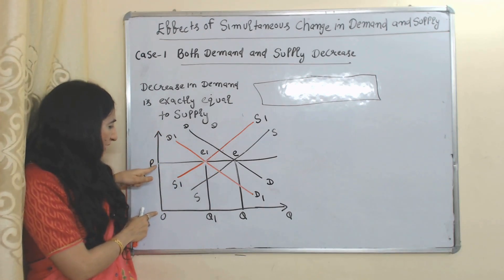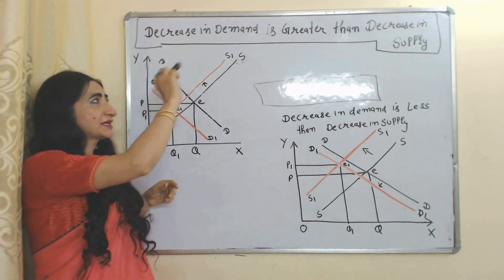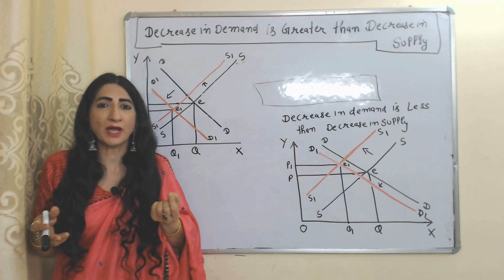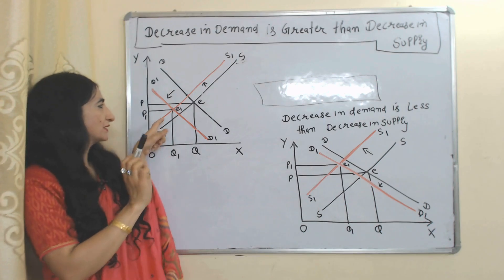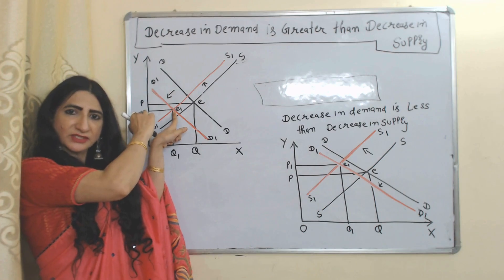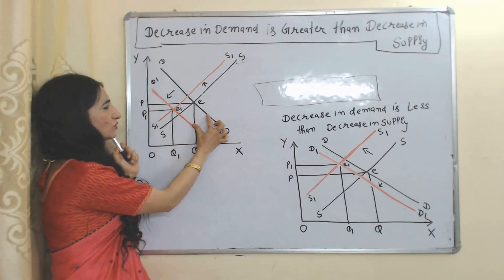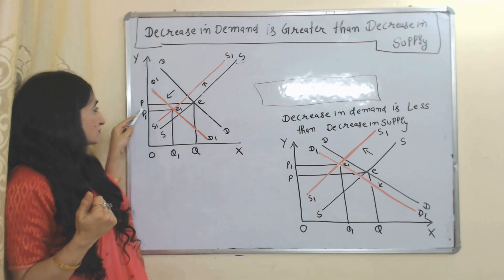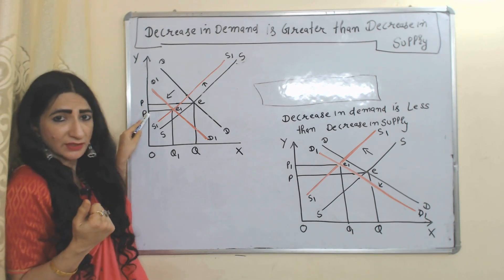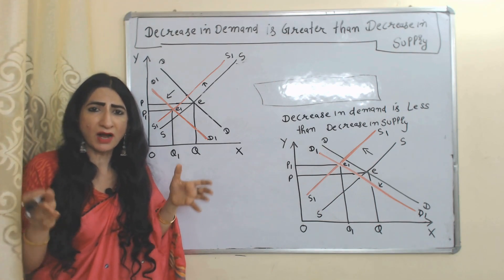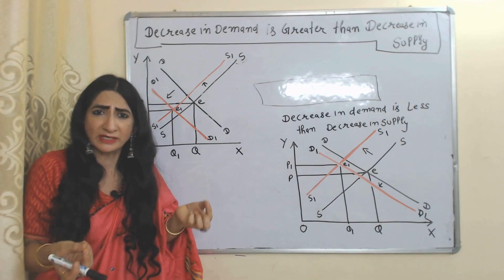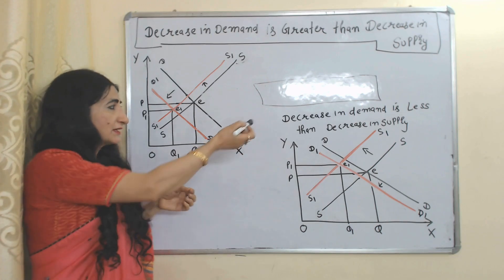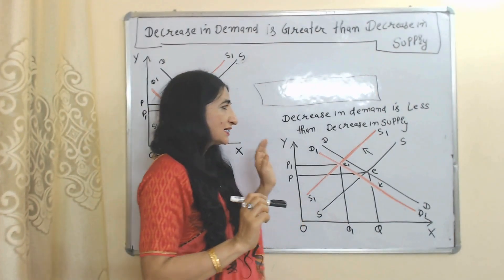Next case: decrease in demand is greater than decrease in supply. That means demand decreases a lot but supply decreases only a little bit. E is the initial equilibrium point, E1 is the new equilibrium point where both curves have shifted backward. Here demand reduces so much but supply reduces only a little bit, so prices will also reduce. Obviously your demand reduced so much but supply reduced only a little bit, meaning producers still have so much remaining product to sell, so they will reduce price.